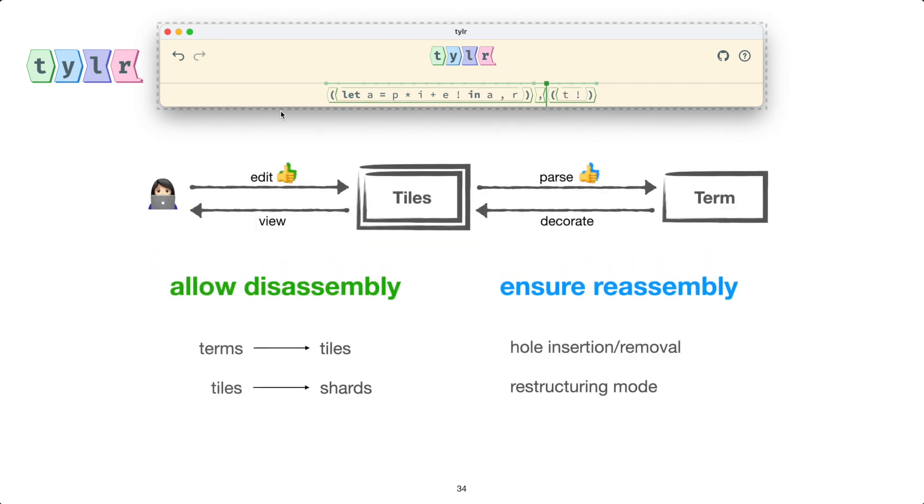Okay, so to recap, we saw how Tyler navigates the tension between flexible linear editing and maintaining hierarchical structure by allowing disassembly and ensuring proper reassembly. This happens at two levels. We can disassemble terms into tiles, edit those tiles, and Tyler will insert and remove holes along the way to maintain these geometric notions of fit, which guarantees parseability.